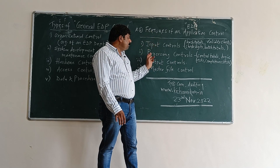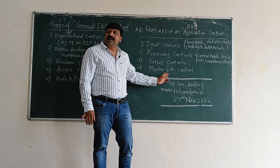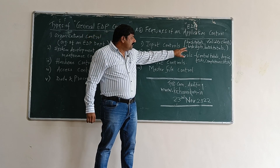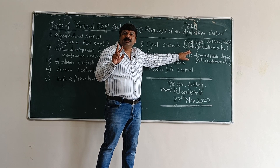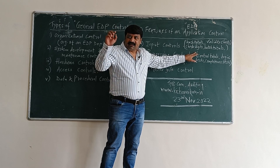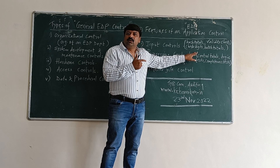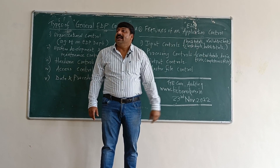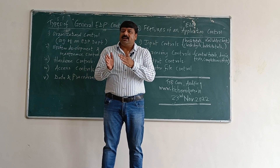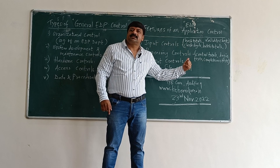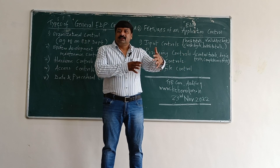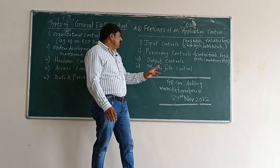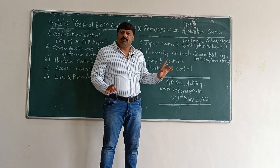Application control consists of: first, input; second, processing; third, output; and last, master file control. Input controls include check digits — whether the input going in is correct — batch totals, whether they are coming correct, hash totals, and validity checks — whether the input provided to the system is valid or invalid. Validity checks are separate programs designed to verify the correctness of input to the system.